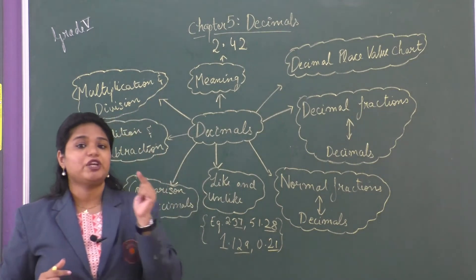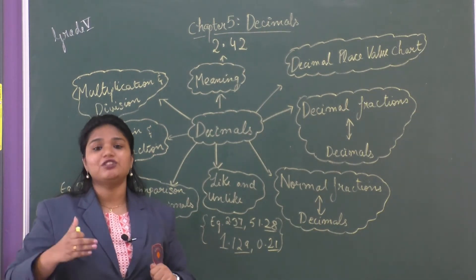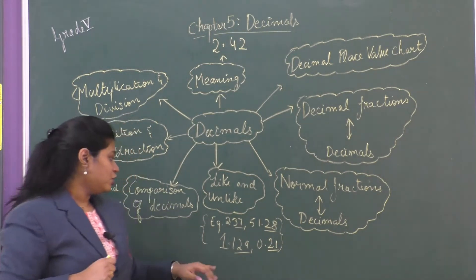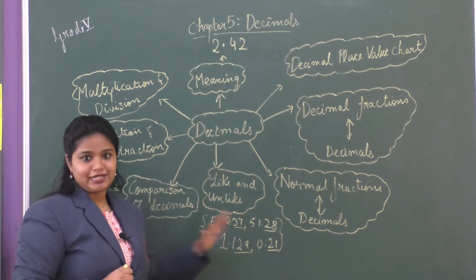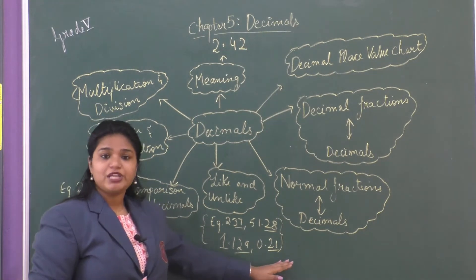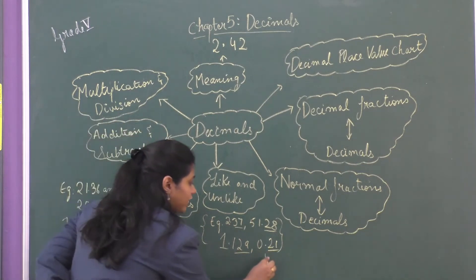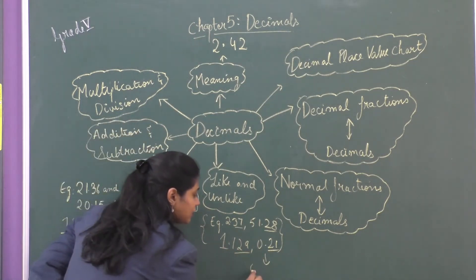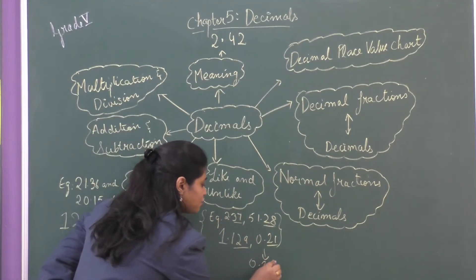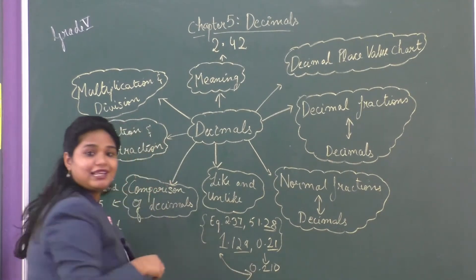We also learned that we can always convert unlike decimals into like decimals by adding zeros to make the number of decimal places equal. For example, with 1.129 and 0.21 — the highest number of decimal places is three — so we can make 0.21 into a like decimal by adding a zero to get 0.210. Now these two numbers are like decimals.